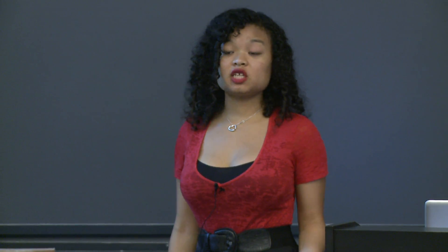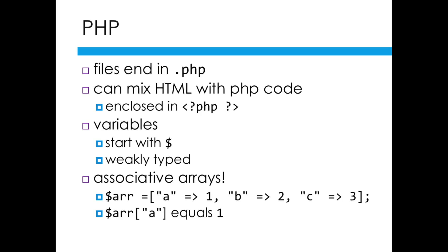Another thing is that PHP allows you to use associative arrays. You can define an array like you would in C by saying dollar sign, the name of your array equals, and then in square brackets have the list of values. But in PHP you can also specify a hash function. You can specify the index, what you're going to call it, and then that corresponds to a value. If you pass in a equals 1, b equals 2, c equals 3, then your array at index a would give you 1.